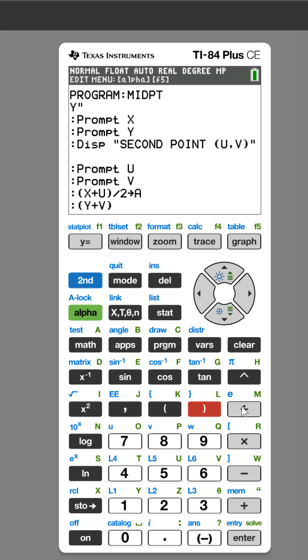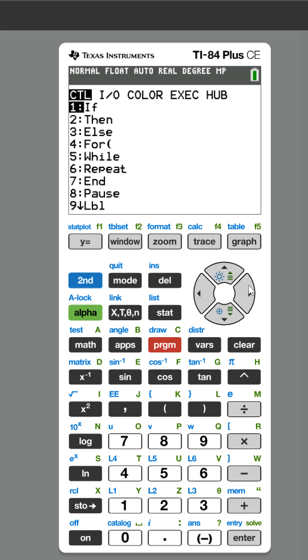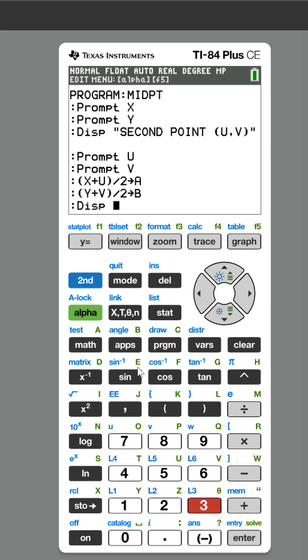We're gonna store that to B. Now we need to display the two numbers, so program input output, we're gonna display again and we're gonna tell them what we're showing. We're gonna say midpoint X - oh there we go couldn't find that.